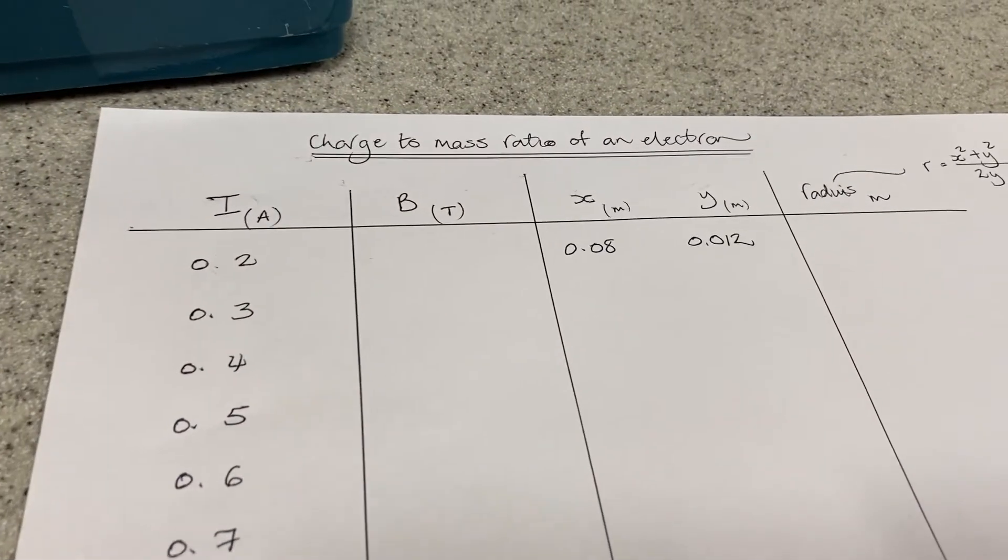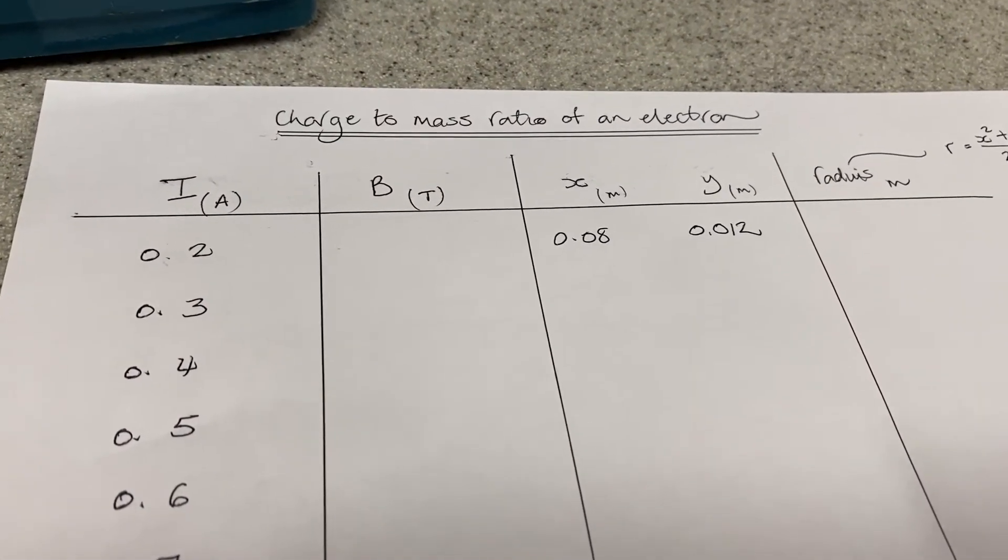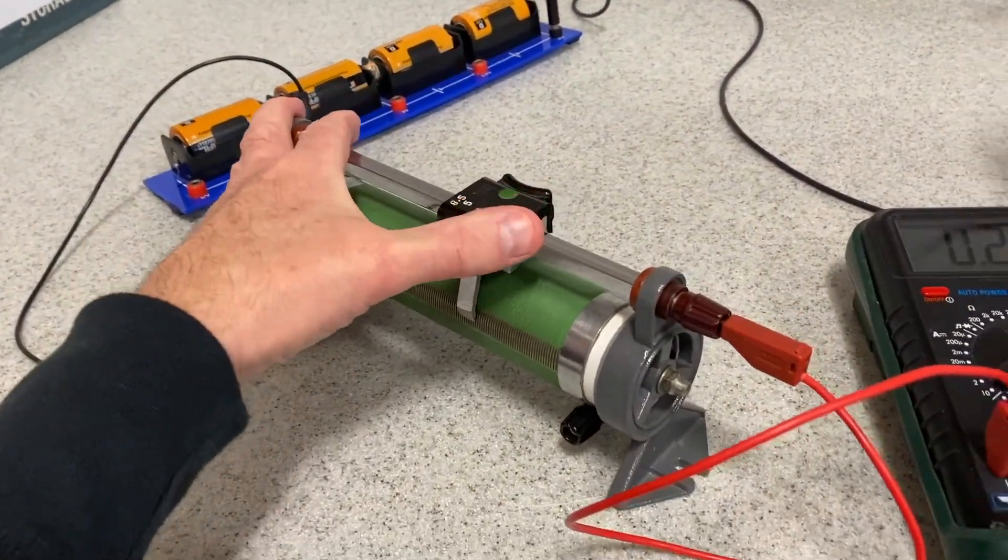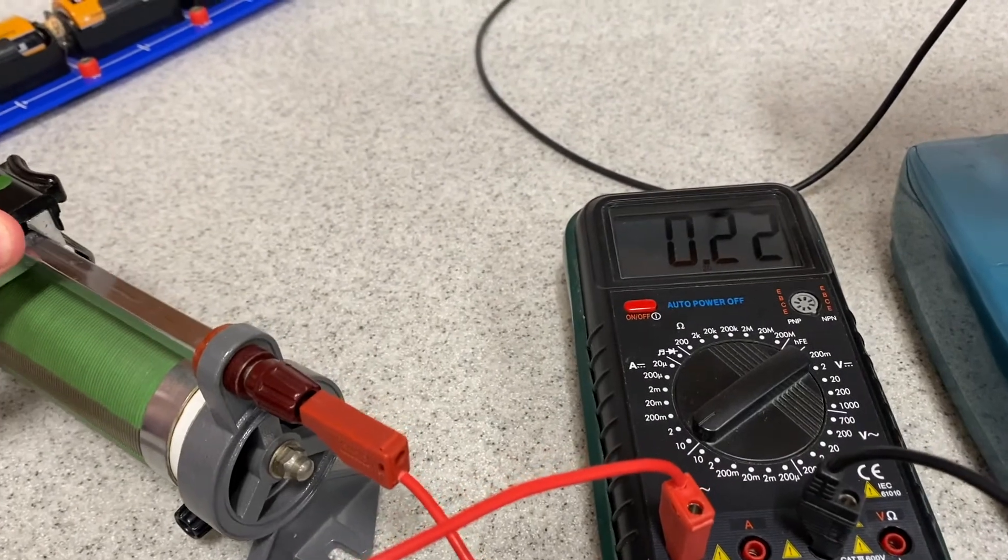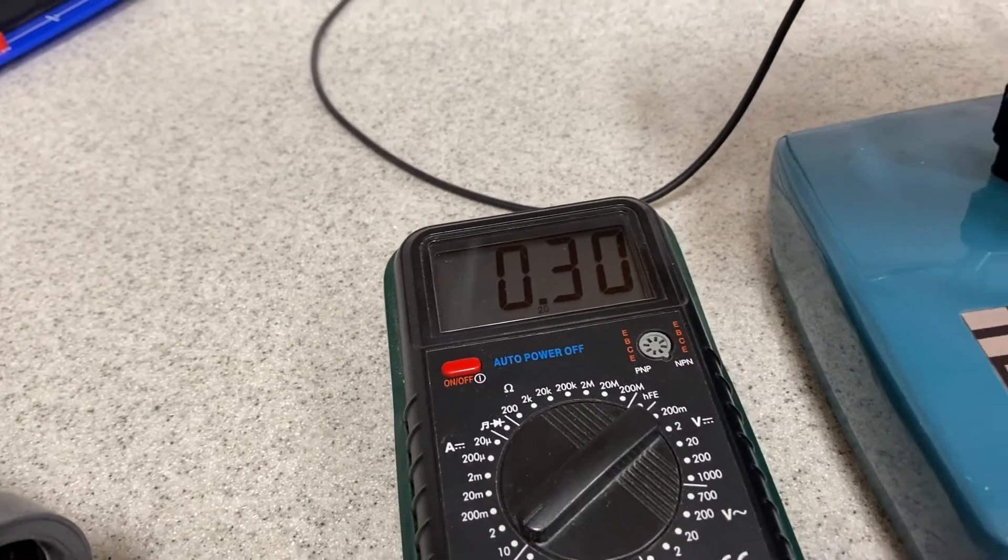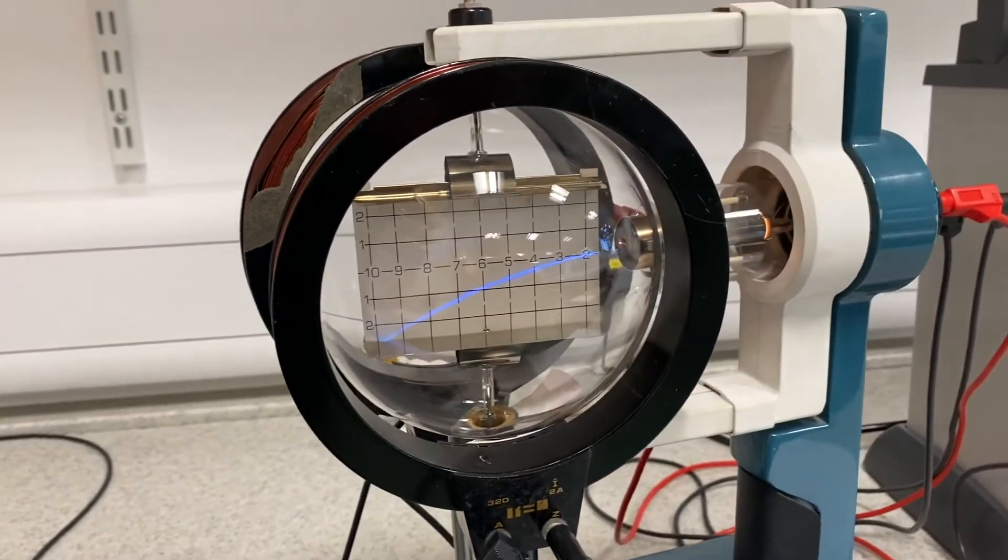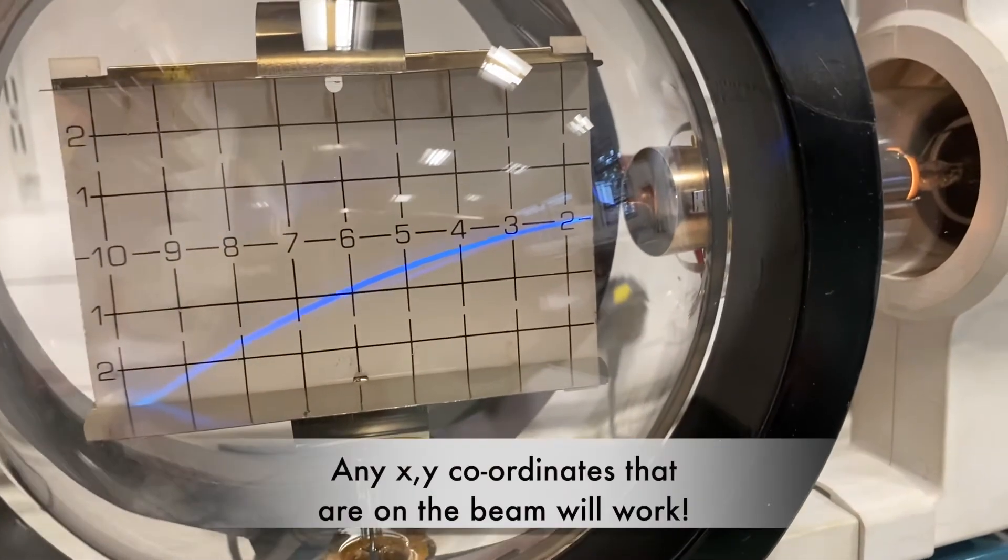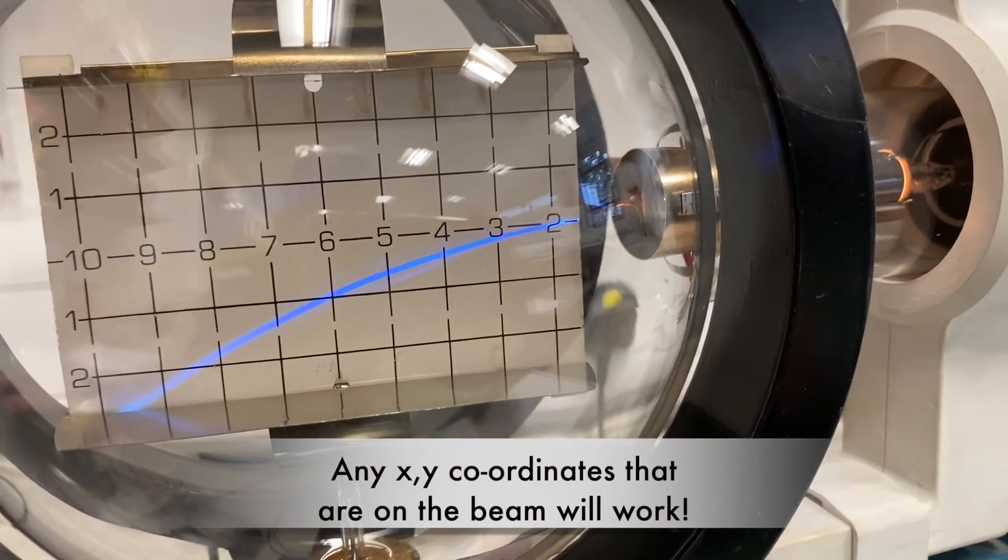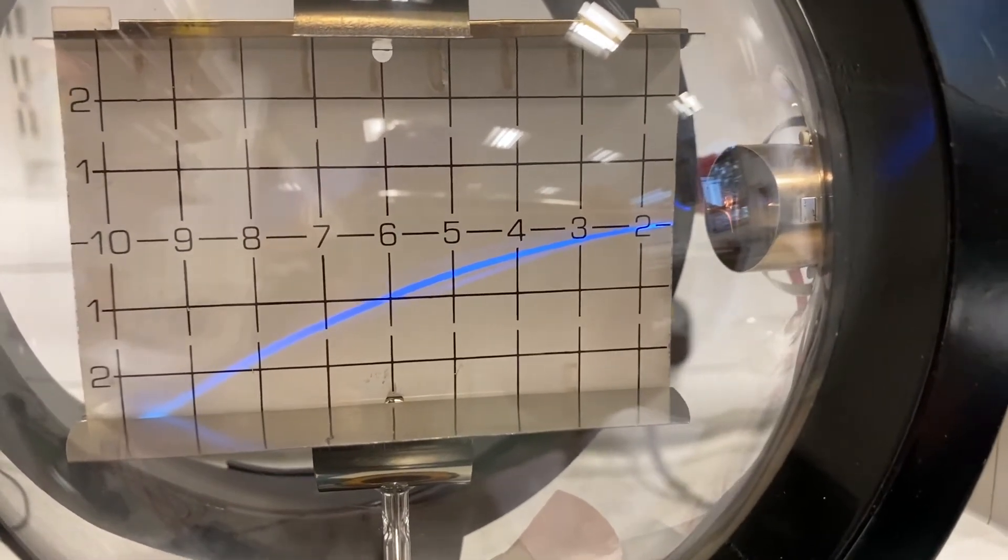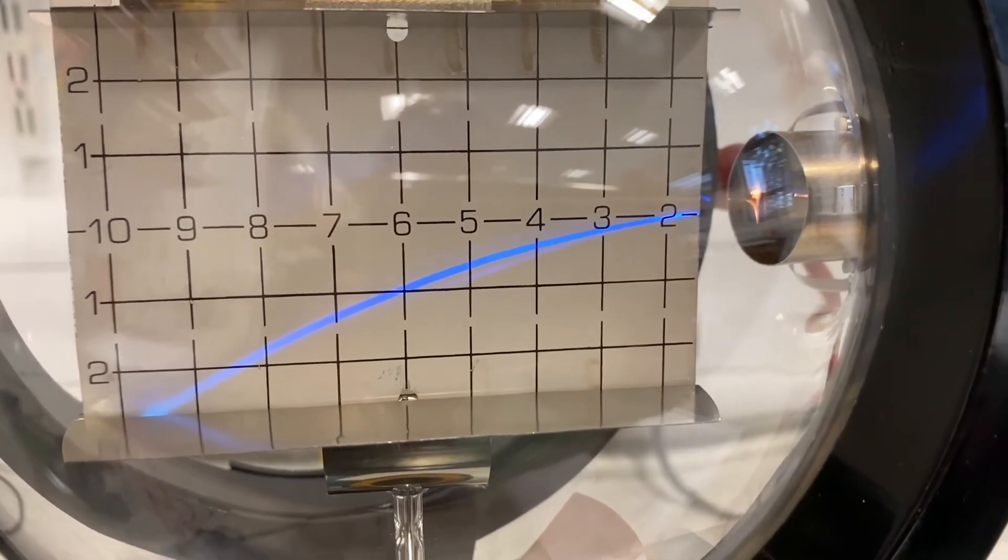Now I'm going to increase the current to 0.3 amps and see what my next pair of coordinates are. So I'm just moving the variable resistor, and my current will change. I want it to be 0.3 amps. So I'm at 0.3 amps, my corresponding component, I'm going for, and it's pretty much, when x is 6, y is equal to 1. So 6 and 1.